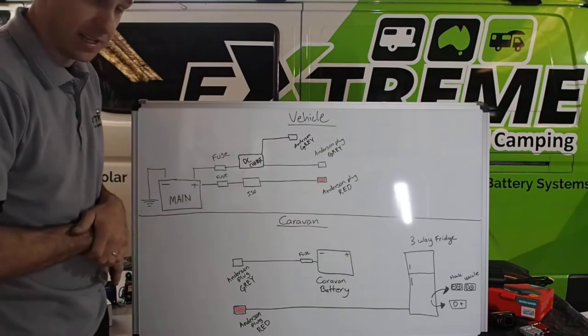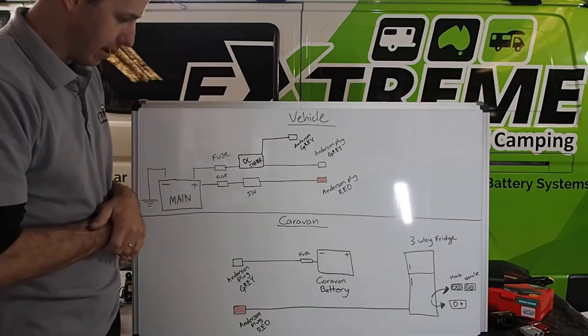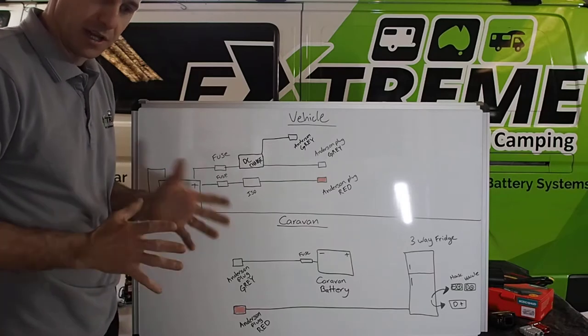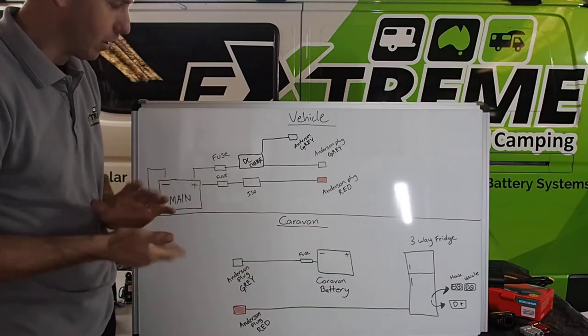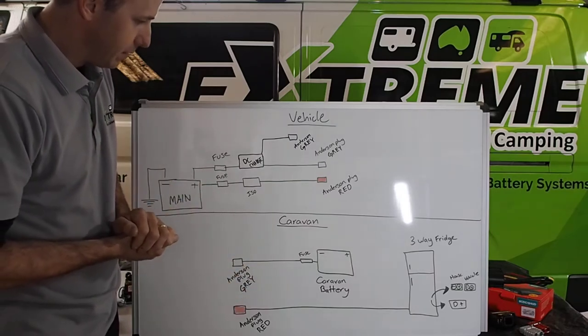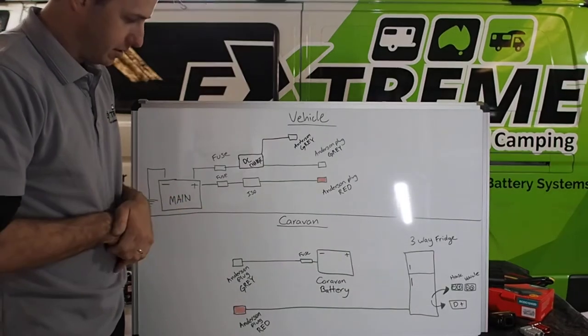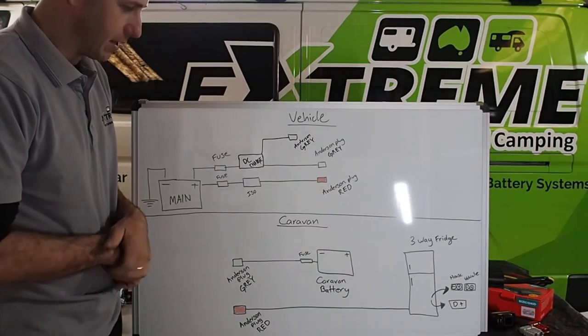The modification on this setup is a DC charger in the vehicle. A lot of people do it because they've got a second battery on the bonnet in the back, wherever. Having a DC charger in the vehicle doesn't necessarily mean the caravan has to have one.